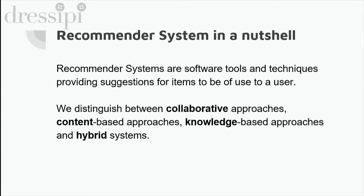For example, we have collaborative approaches, where we exploit the information and purchases of a community of users and try to identify neighbors — similar users to you. We have content-based approaches, where we try to exploit the characteristics of each item to recommend it. And we have knowledge-based approaches and hybrid systems where we combine the previous ones.